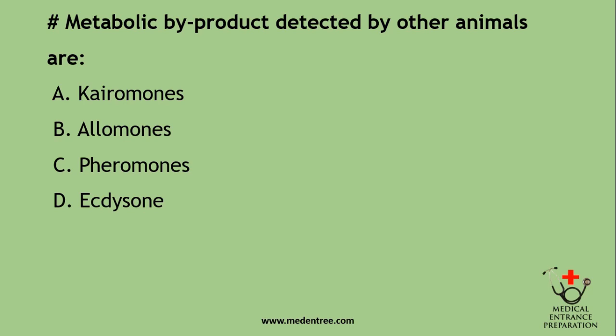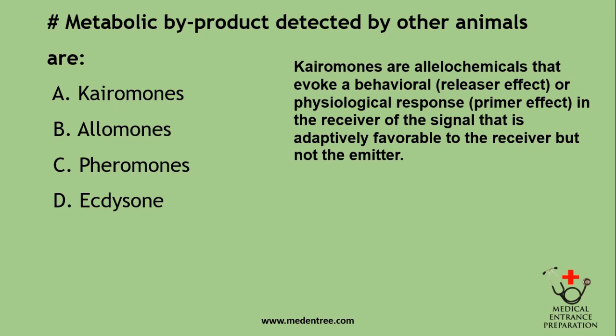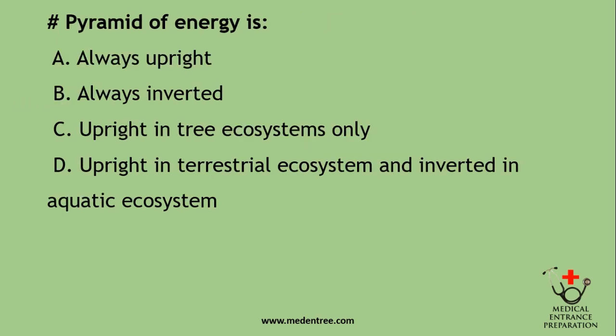Metabolic byproducts detected by other animals are: kairomones, allomones, pheromones? The answer is kairomones. Kairomones are allelochemicals that evoke a behavioral or physiological response in the receiver, which is adaptively favorable to the receiver but not to the emitter. Pyramid of energy is: always upright, always inverted, upright in three ecosystems only, or upright in terrestrial and inverted in aquatic? The pyramid of energy is always upright.